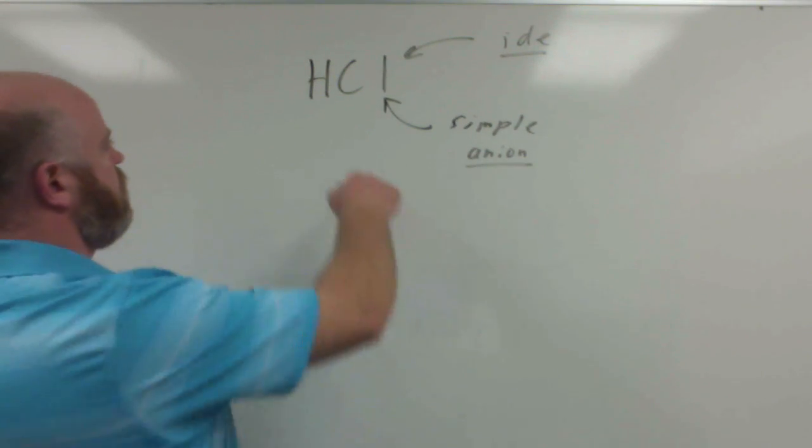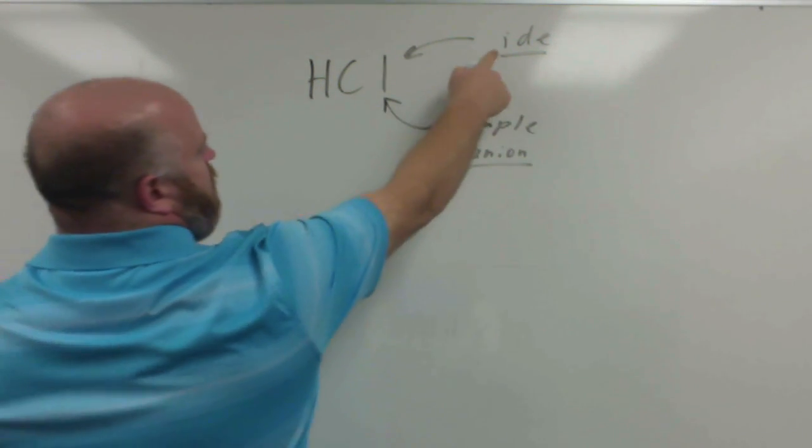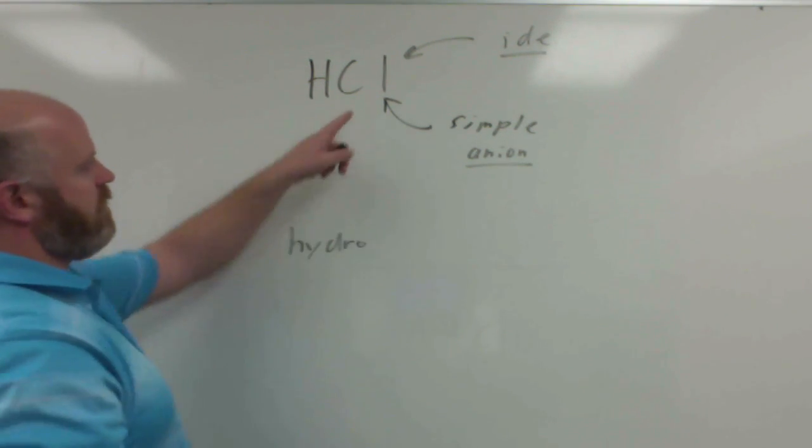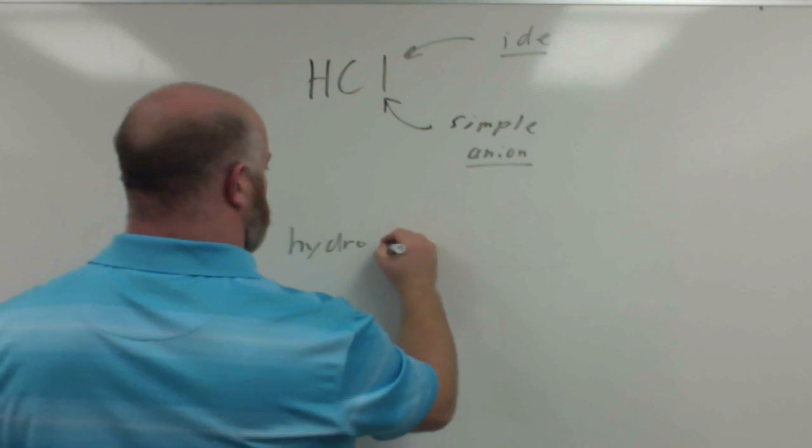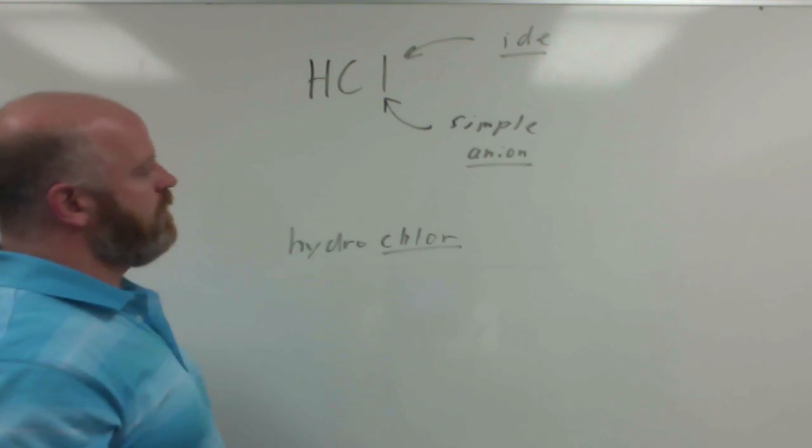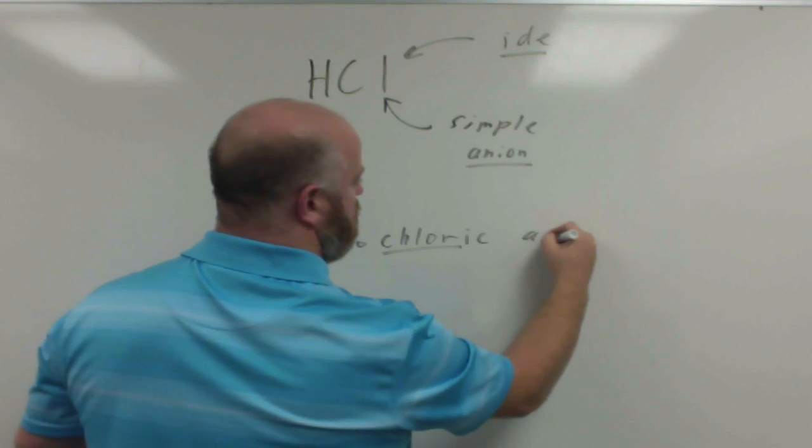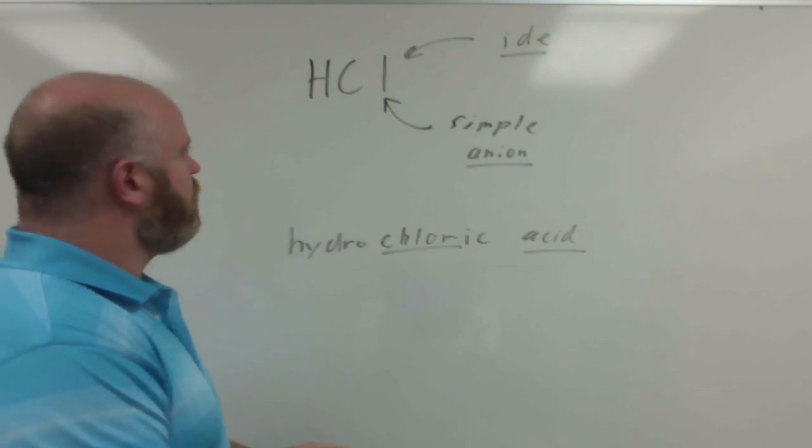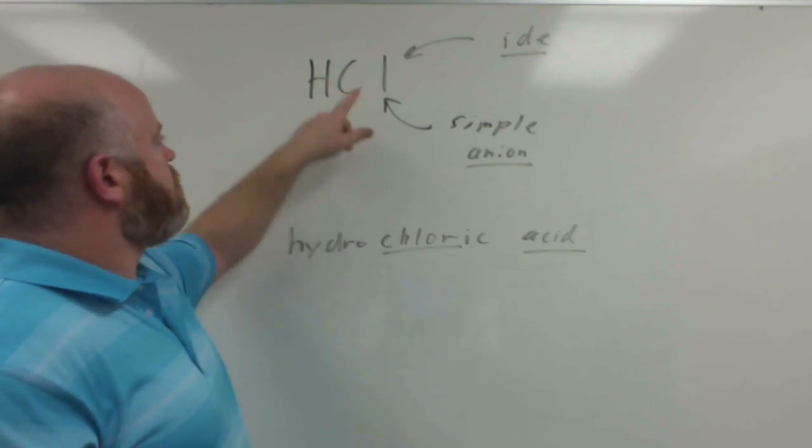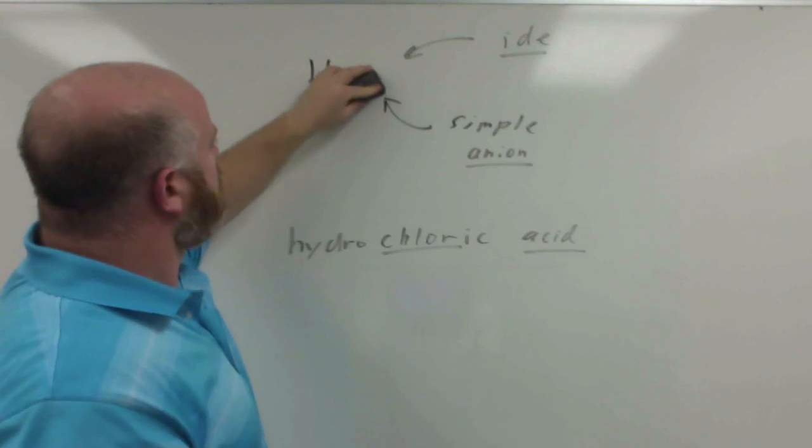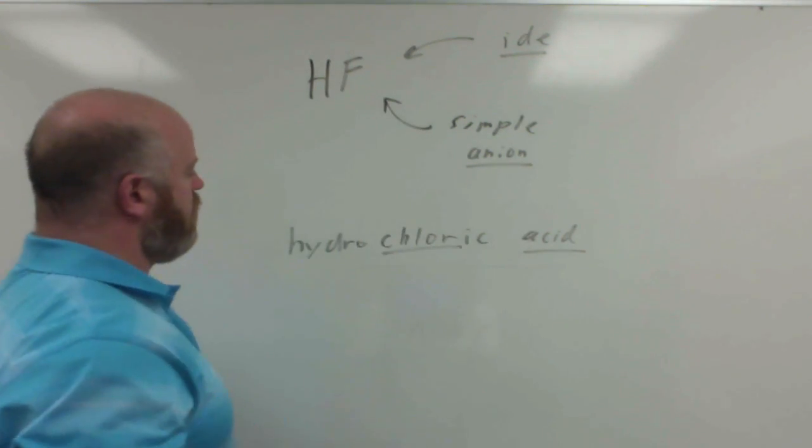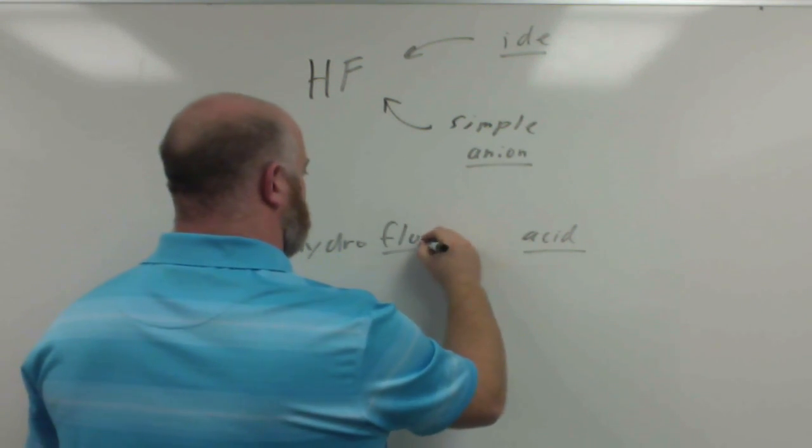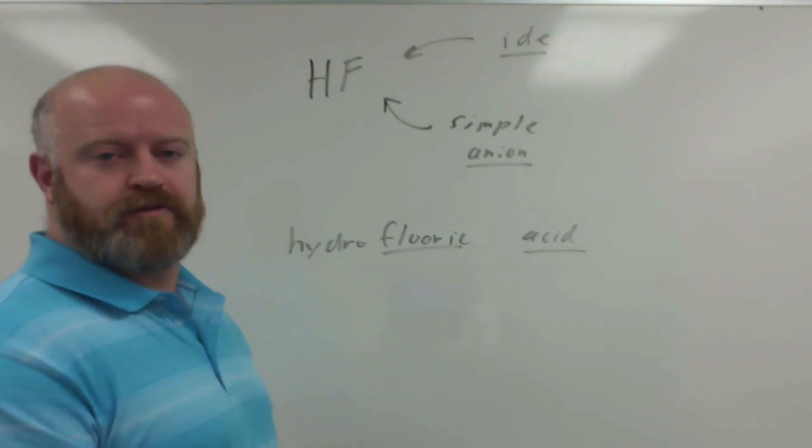The way we name this, because we have an -ide ending and a simple anion, we put the prefix hydro up front. This is chlorine so we would call that chlor and then we end it with -ic acid and the word acid does need to be there. If this was a different anion, let's say it was fluorine, we would just have hydrofluoric acid and so forth.